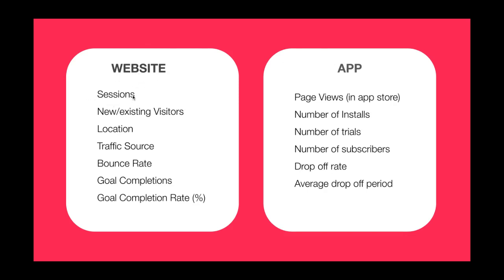For your website, you're looking at sessions — how many people are coming to your website — and it's always good to look at new versus existing visitors. Are you always attracting new people? Where are they based? If you're a local business you'd look at that from a more granular perspective, whereas if you're an e-commerce store selling worldwide, you'd want to know if Australia is first, then the UK, then the US — or is the US the number one market? You can get more granular within states as well to refine your advertising. Traffic source is where it's coming from: direct, organic search, social media, paid ads, or other sources like backlinks.